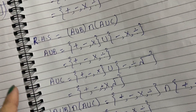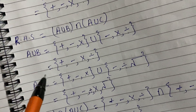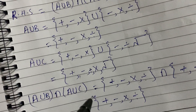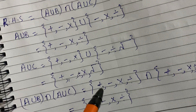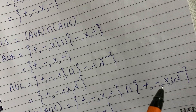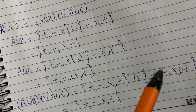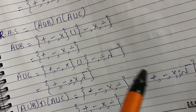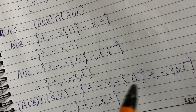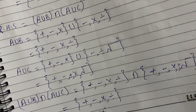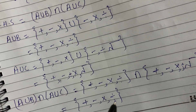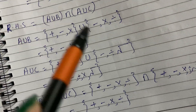Next, find the intersection of these two sets: {+, -, ×, ÷} intersection {+, -, ×, ÷, √}. The common elements are addition, subtraction, multiplication, and division. So the right hand side equals {+, -, ×, ÷}.